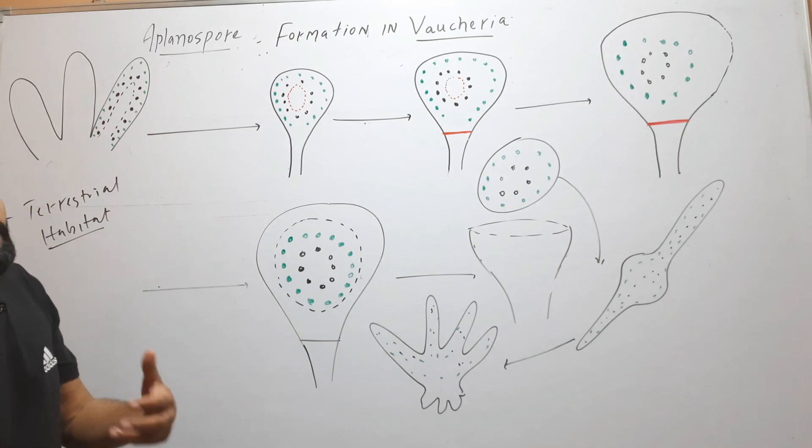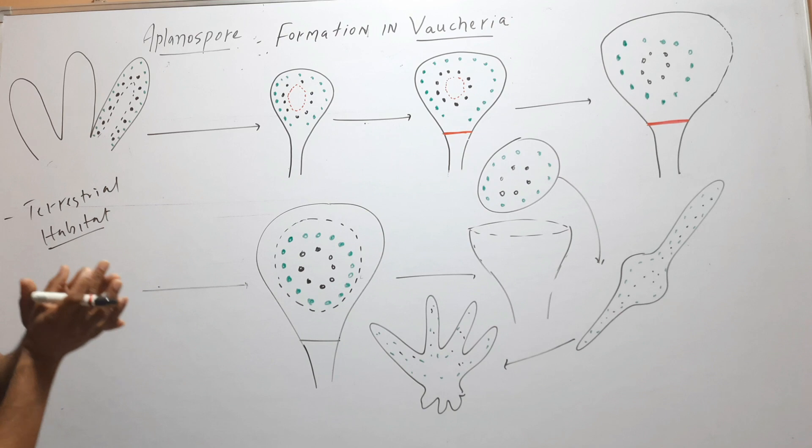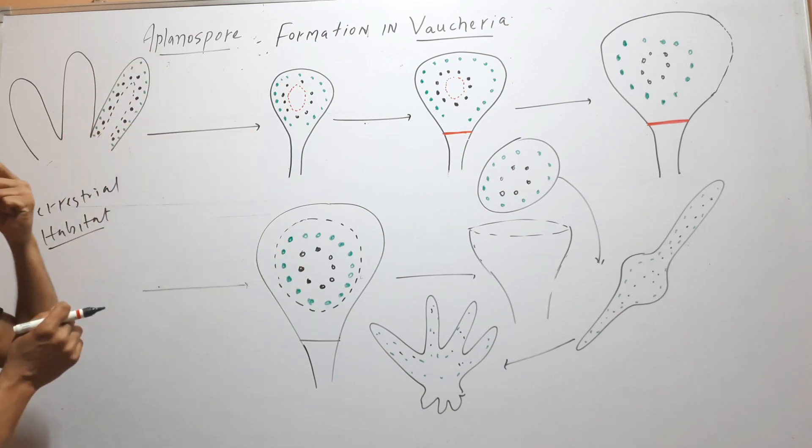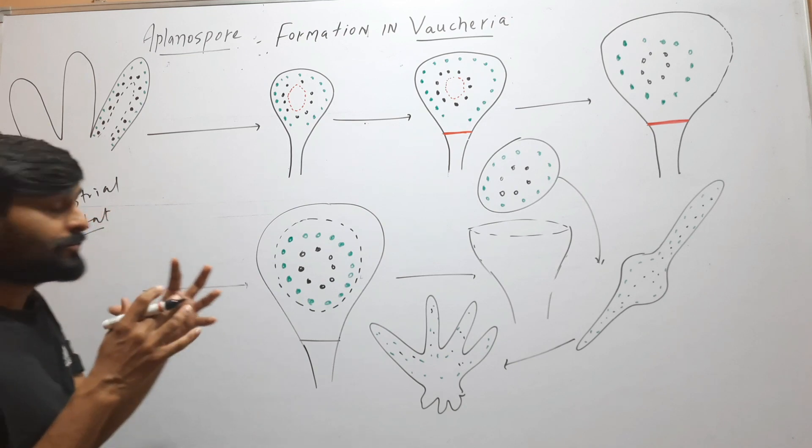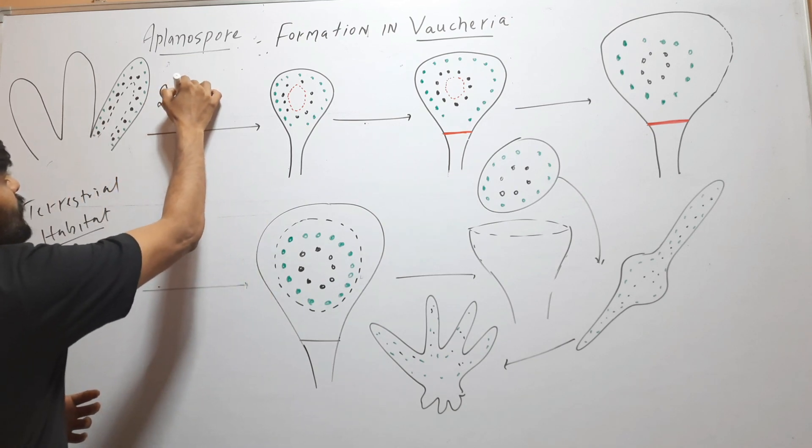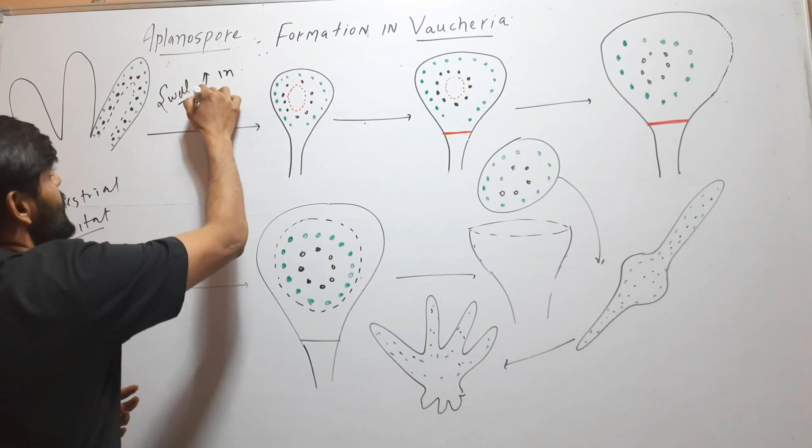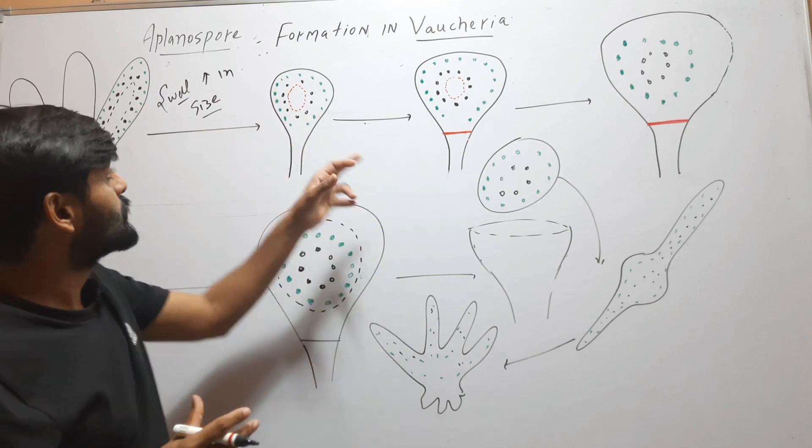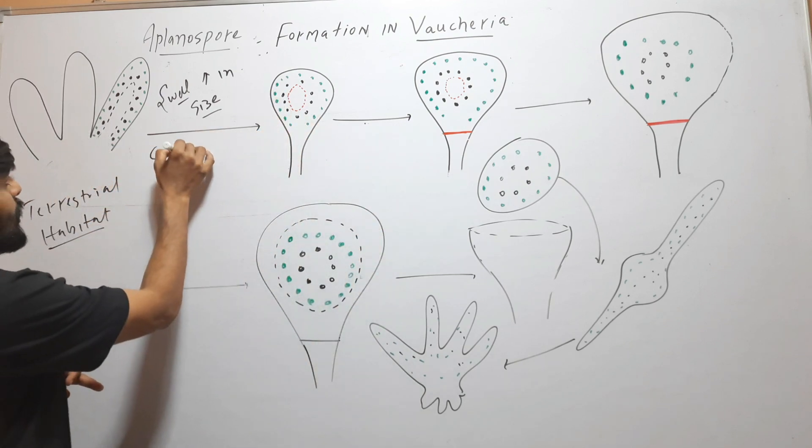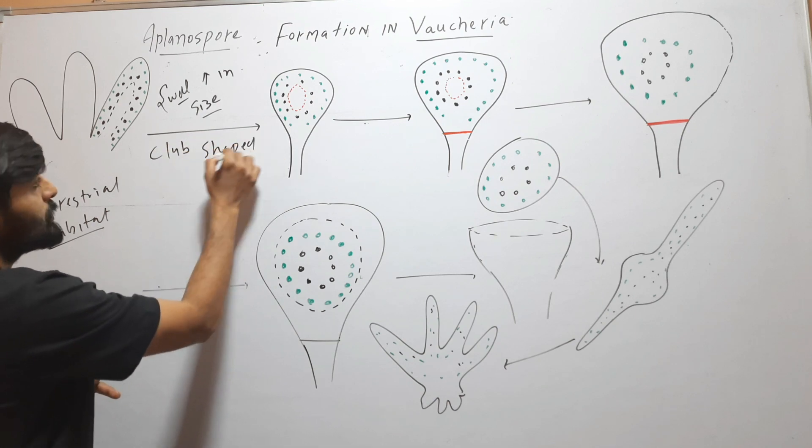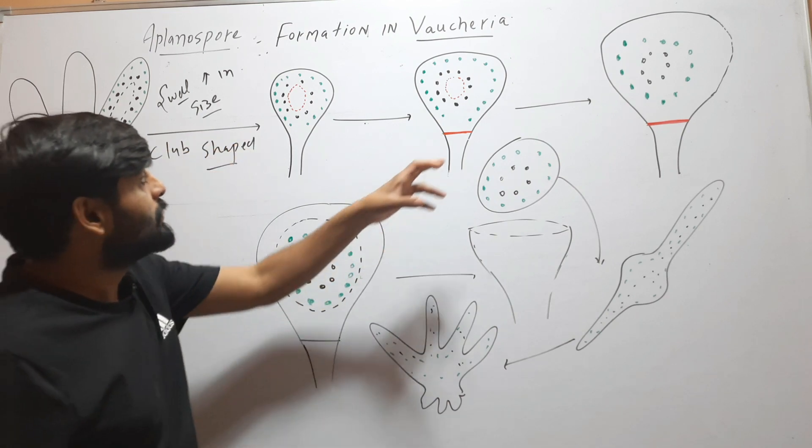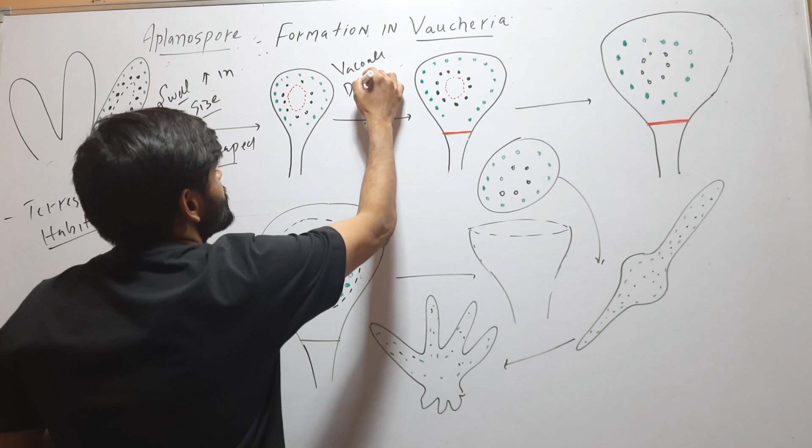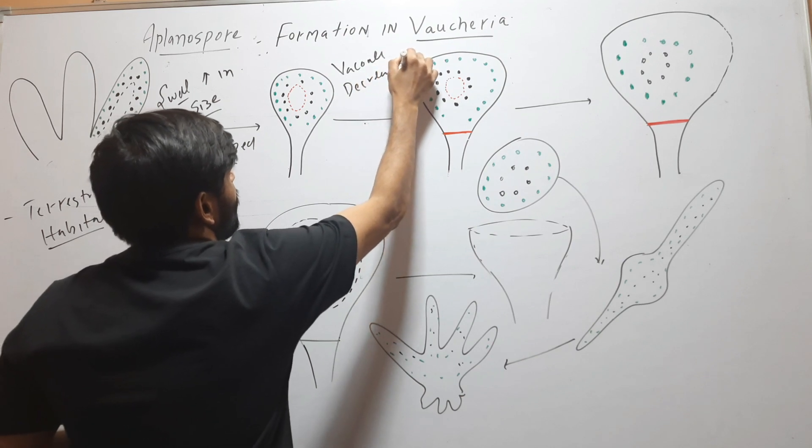So how does this formation occur? Any filament, we know that Vaucheria is a filamentous alga. Any filament, like zoospore formation, first will swell and increase in size. So first it will swell, and it becomes club-shaped.